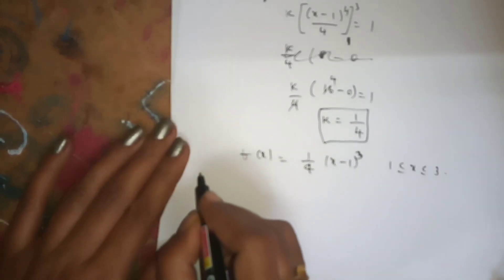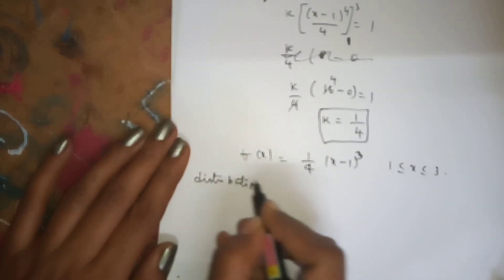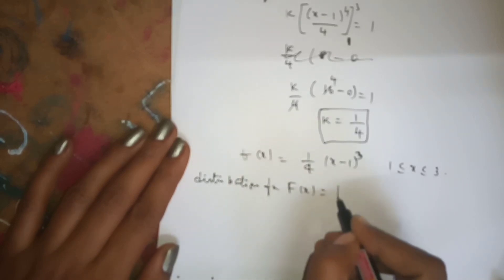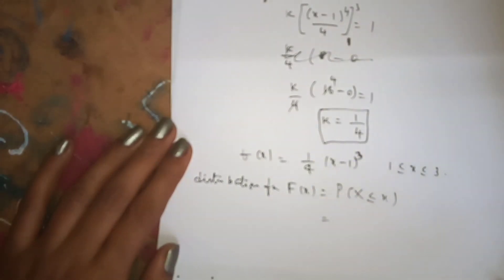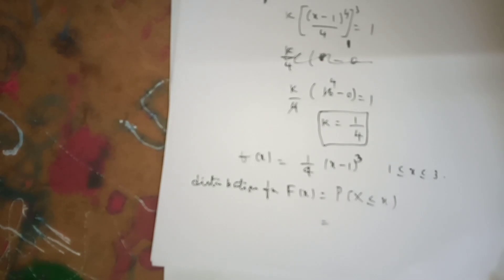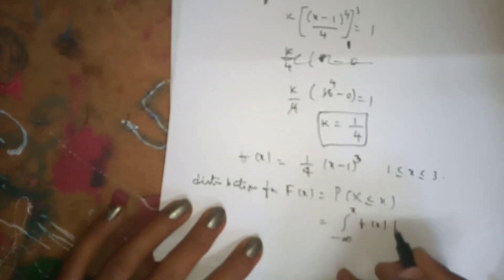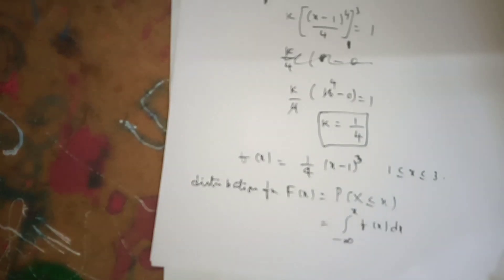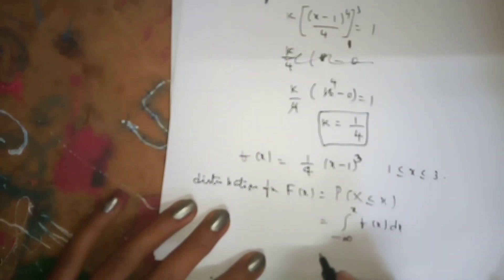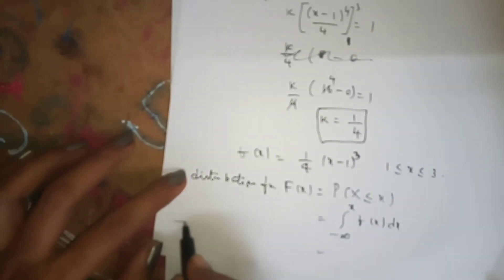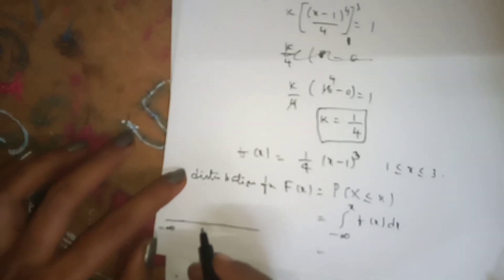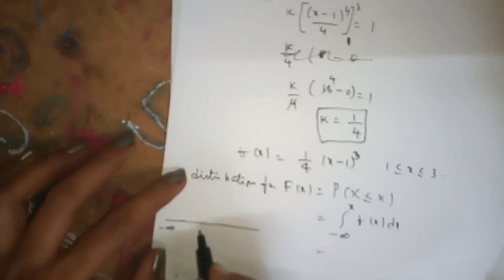Now we calculate the distribution function. Capital F(x) = P(X ≤ x), which for a continuous random variable is the integral from minus infinity to x of f(x) dx. Since our function is defined for x between 1 and 3, we split the integral from minus infinity to x into two parts: minus infinity to 1, and 1 to x.